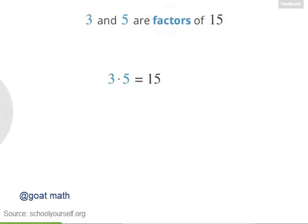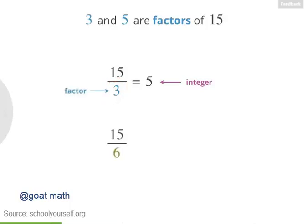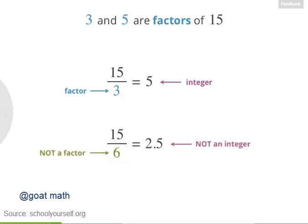What's a factor? Well, if you take 15 and divide it by 3, you get 5, which is an integer or whole number. So that means 3 is a factor of 15. What if we divide 15 by another number, like 6? Well, 15 divided by 6 is 2.5, which is not an integer. That means 6 is not a factor of 15.